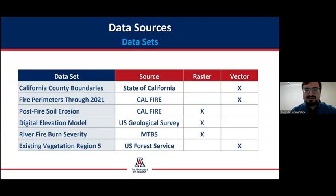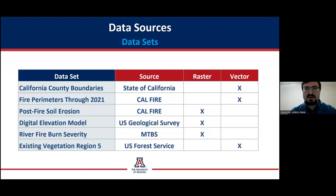Six sources were used for this project, three of them vector and three raster. All six datasets were created by government agencies and are publicly available online. Ideally, the end user of the model will be able to go online and acquire the datasets relevant to the incident they are examining from these same publicly available websites.